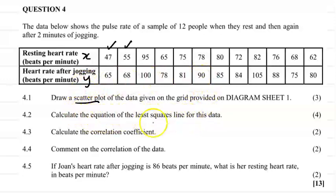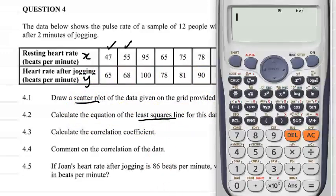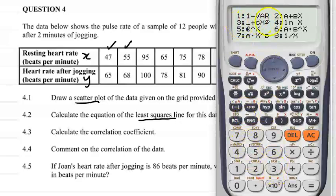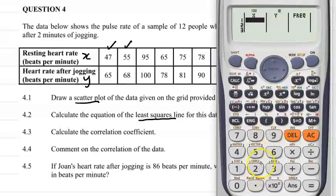So we're going to use our calculator to find the equation of the least squares regression line. So therefore we just press mode stats option three on my calculator. Now we need to get the five variants so a plus bx is our equation of the least squares regression line so we press option two.